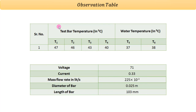We need to make an observation table. Here you can see the observation table in which different temperatures from T1 to T6 are recorded. T1 to T4 are the temperatures of the test bar, while T5 and T6 are the temperatures of the water. The exact values are: T1 = 47, T2 = 46, T3 = 43, T4 = 40, T5 = 37°C, and T6 = 38°C. Voltage is 71 V and current is 0.33 A.